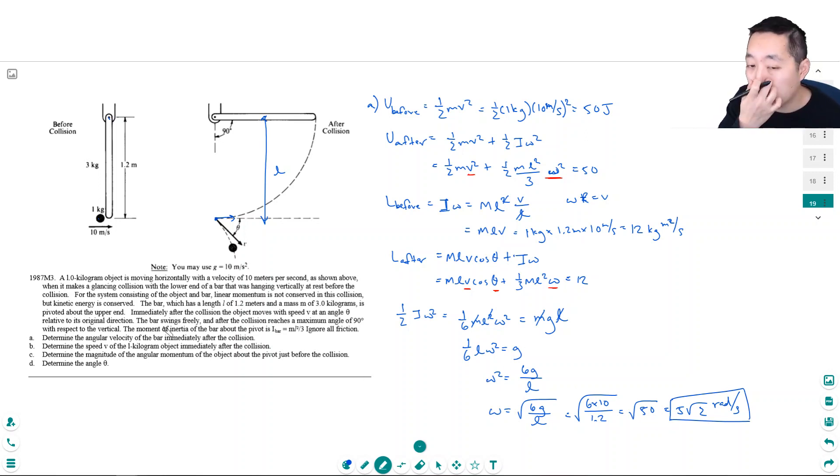That's determine the angle. So you see the thing is now I can kind of substitute and go back to the energy equation. Now that I know omega, I can solve for V, the linear speed. So part B, I know all of this is equal to 50. So I have one half mV squared plus 1 sixth mL squared omega squared is equal to 50.